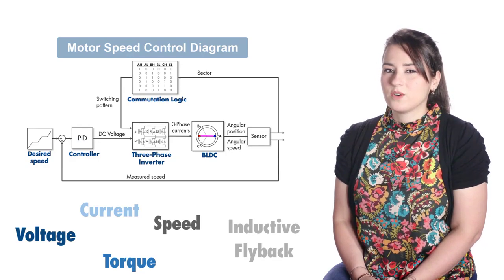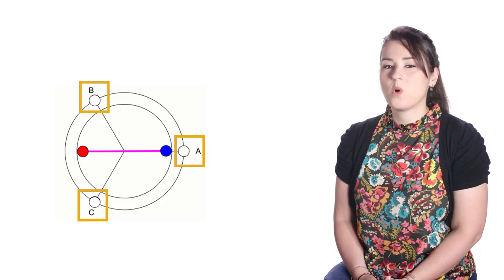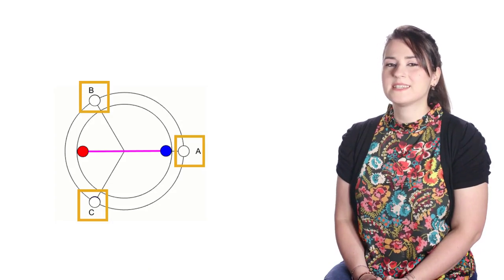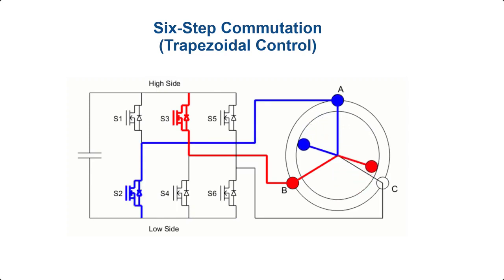In the previous video, we introduced a BLDC motor that has three coil windings in the stator and a single pole pair in the rotor. We also talked about how motion is generated in the BLDC motor through the six-step commutation or trapezoidal control, where the correct phases are commutated every 60 degrees for continuous rotation of the motor.